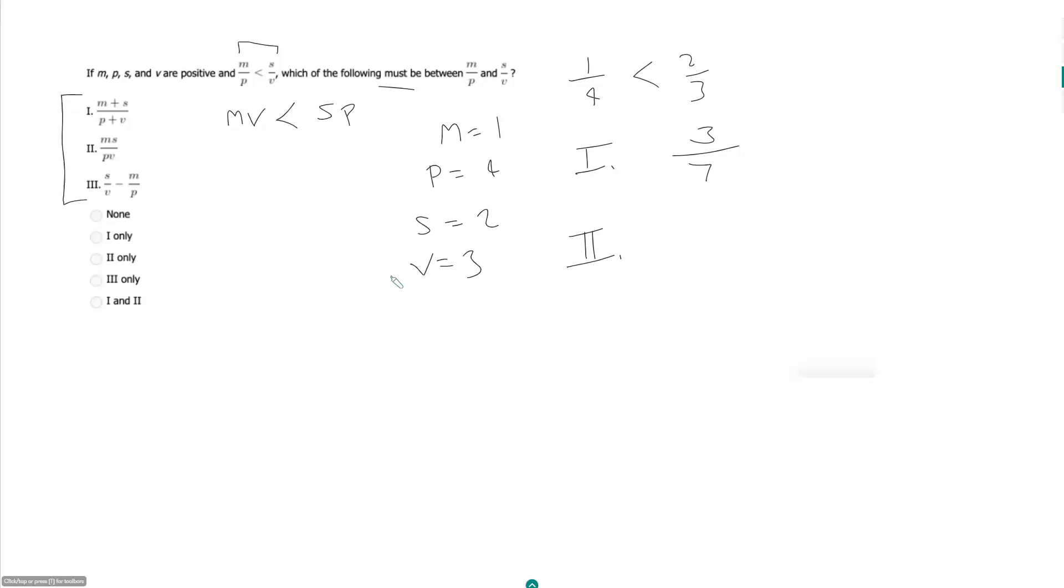m times s over pv. So that would be 1 times 2 is 2. p times v would be 4 times 3, which is 12. This is 1 sixth. So 1 sixth is outside of our group. 1 sixth would be over here. So that is good, because I can eliminate anything with a 2 in it now.